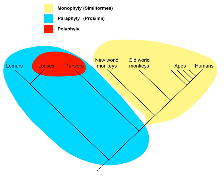A polyphyletic group is a set of organisms, or other evolving elements, that have been grouped together but do not share an immediate common ancestor. The term is often applied to groups that share characteristics that appear to be similar but have not been inherited from common ancestors. These characteristics are known as homoplasy, and the development and phenomenon of homoplasy is known as convergent evolution.